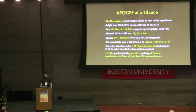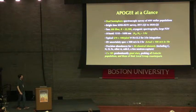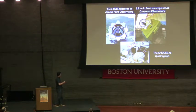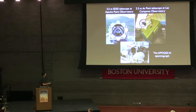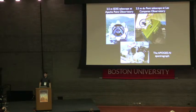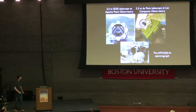It's a high-resolution survey, with resolution of about 23,000. It's a dual hemisphere survey — one component is at Apache Point Observatory, the 2.5-meter Sloan telescope, and the other is the 2.5-meter DuPont telescope in Las Campanas, with a twin spectrograph built and assembled at the University of Virginia.